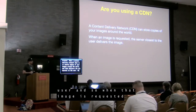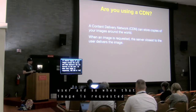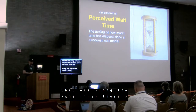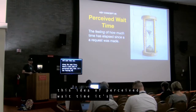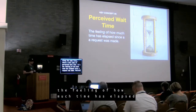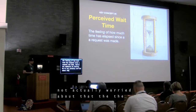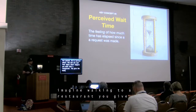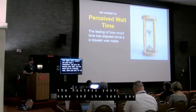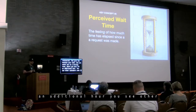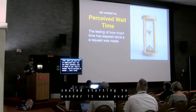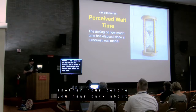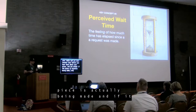When that image is requested, the CDN detects the closest server and uses that one. Along the same lines is the idea of perceived wait time — the feeling of how much time has elapsed since a request was made. Notice the emphasis on feeling; we're not worried about the real time, but how the user felt about it. Imagine you walk into a restaurant, give the hostess your name, and she seats you in a waiting room where you wait an additional hour. You see other customers seated ahead of you. You start to wonder if you ever even put your name in. Then you're seated and wait another hour before hearing about your pizza.